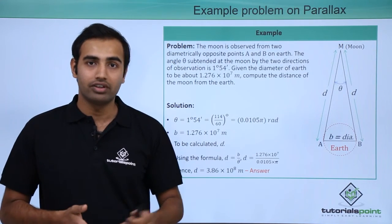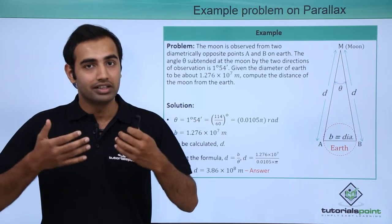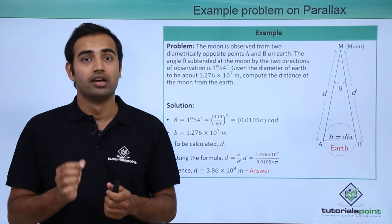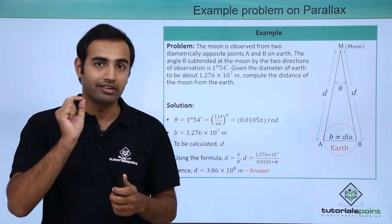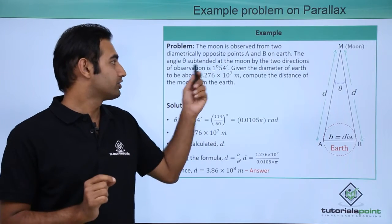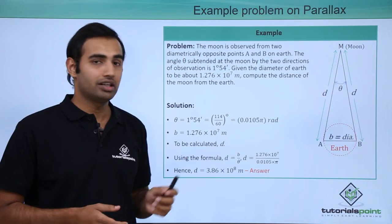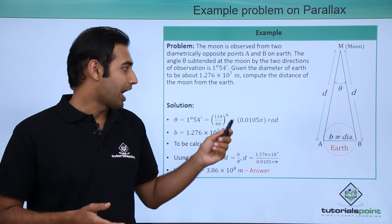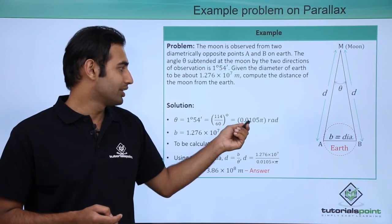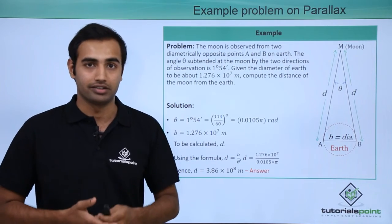Clearly we can use the formula that we learned in the last section which is d is equal to b by theta. But we have to put the value of theta in radians. So we have to convert this value of degrees and minutes into radians first. That's exactly what I have done here by applying correct conversions. The angle in radians I obtain is 0.0105 pi radians.